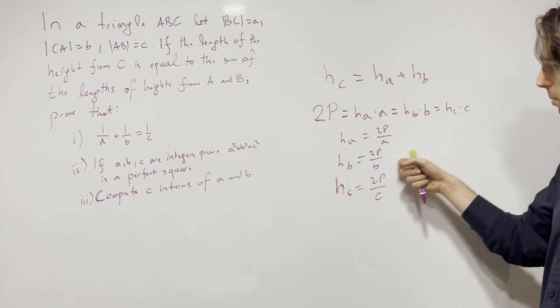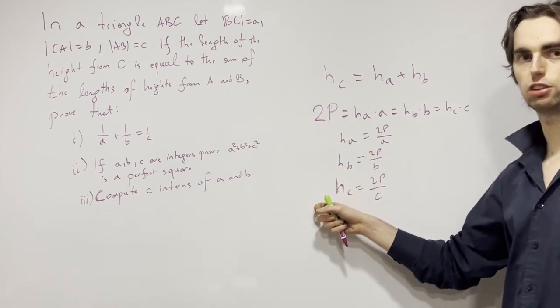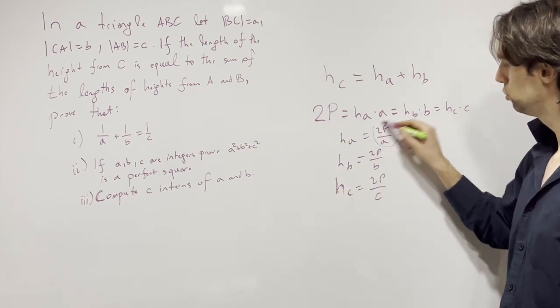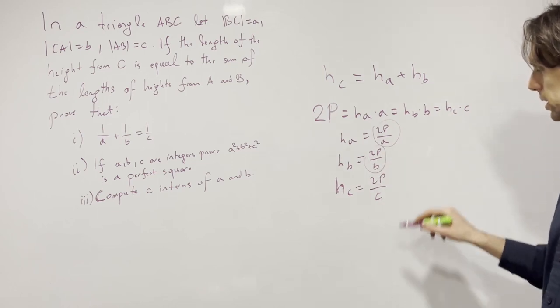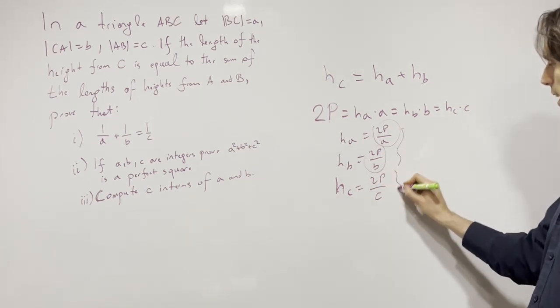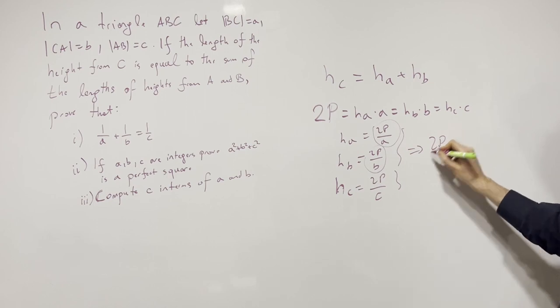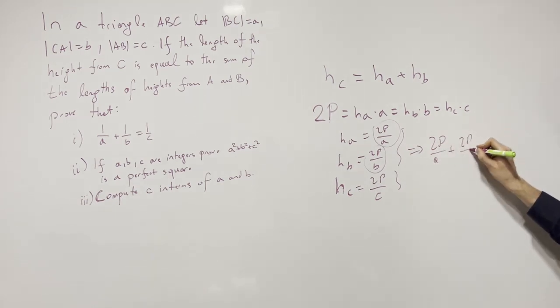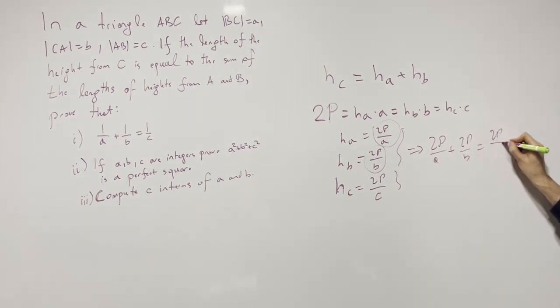Now when I sum these two up, I get h_A plus h_B is h_C. So it means 2P over A plus 2P over B is 2P over C. So let's sum these two up and we'll get that 2P over A plus 2P over B is equal to 2P over C.